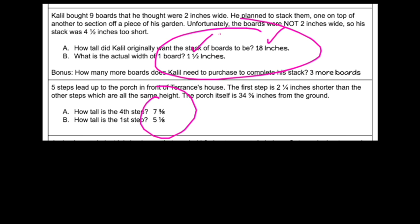I can guess what you did. He bought nine boards, he thought they were two inches wide, planned to stack them one on top of another to section off a piece of his garden. Unfortunately, they're not two inches wide, so his stack was four and a half inches too short. How tall did he want the stack to be?